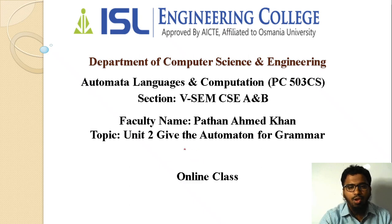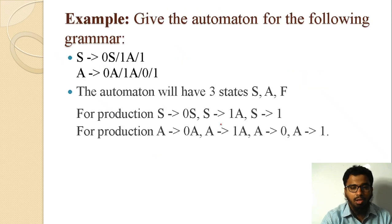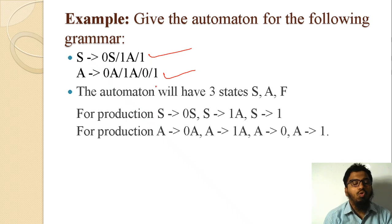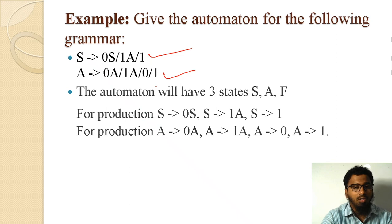Welcome back students. Today we are going to see the next topic: how to create the automation for the grammar. Here we have the grammar — give the automation for the following grammar: S → 0S | 1A and A → 0A | 1A | 0 | 1. How will you draw the automation for this?